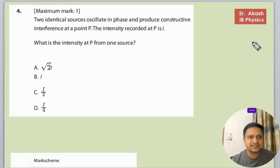There's another question. The question says that two identical sources oscillate in phase and produce constructive interference at a point P. The intensity recorded at P is I. What is the intensity at P from one source? So first...